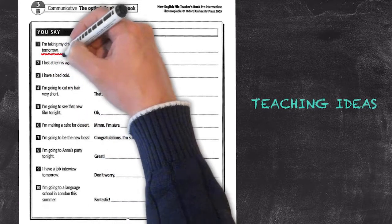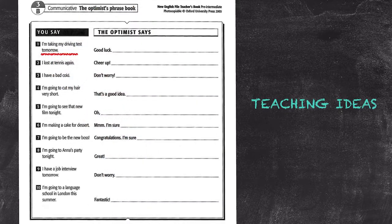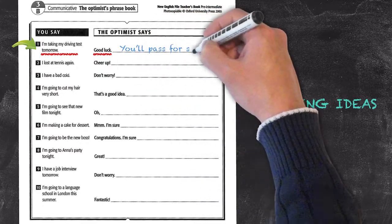One has a prompt to say something and the other will begin it with a certain comment and then make a sentence using the future simple tense. Here, I'm taking my driving test tomorrow. Good luck, you'll pass for sure.